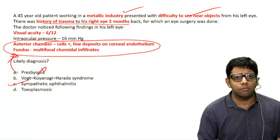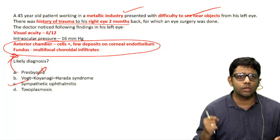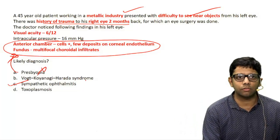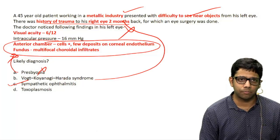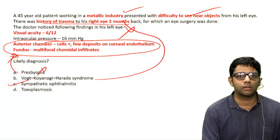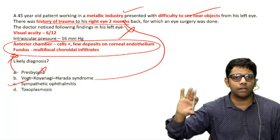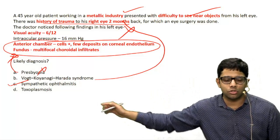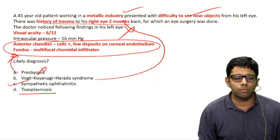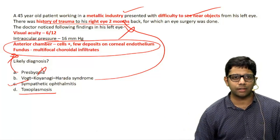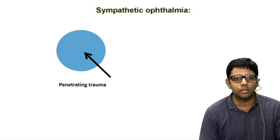Vogt-Koyanagi-Harada syndrome has similar features but also presents with systemic features like poliosis, tinnitus, and sensorineural deafness — and there is no history of trauma. In toxoplasmosis, there is also no history of trauma; instead there is a 'headlight in fog' appearance with a single choroidal infiltrate and vitritis inflammation. Toxoplasmosis is the most common cause of uveal involvement, but there is no trauma history — rather a history of pet cat contact.